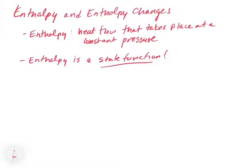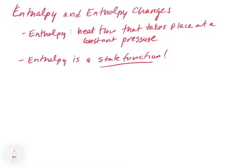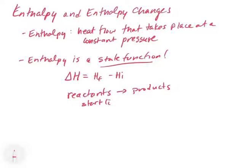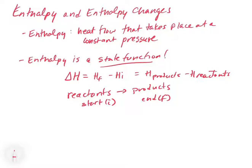Enthalpy is a state function, so it only matters where you finish and where you start. In a chemical reaction, we define delta H as equal to H final minus H initial. Since most chemical reactions go from reactants to products, this is equal to the enthalpy of the products minus the enthalpy of the reactants. It doesn't matter what route the reaction goes through — what matters is the difference in energy between the products and the reactants.